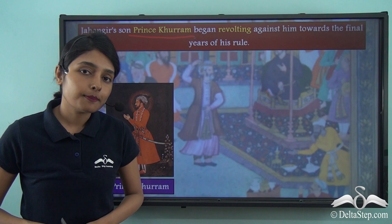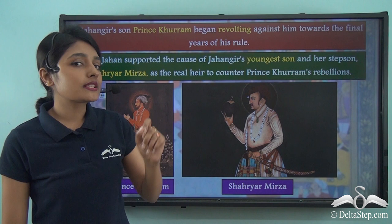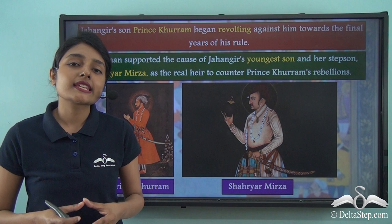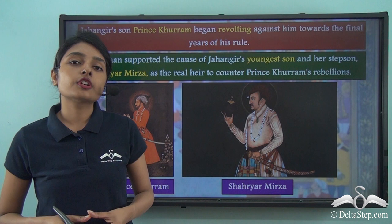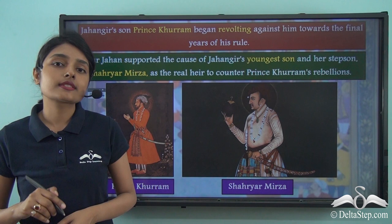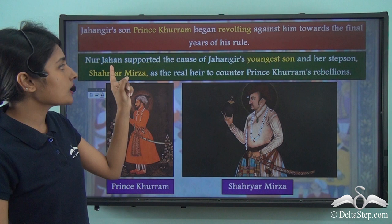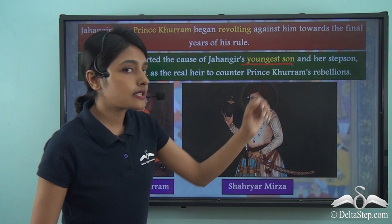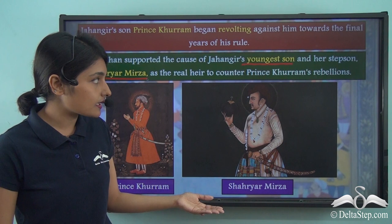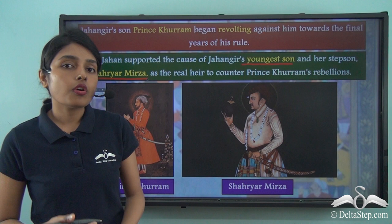Prince Khurram resented the influence that Nur Jahan held over the alcoholic Jahangir. To counter Khurram's rebellion, Nur Jahan supported Jahangir's youngest son — and her stepson — Shahriyar Mirza as the rightful heir to the throne, effectively pitting Shahriyar Mirza against Prince Khurram.